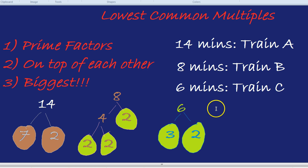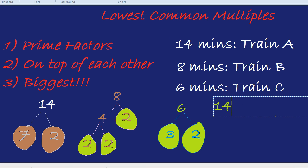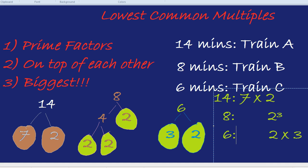Now we've done the prime factors, we write them on top of each other. Train A is 7 times 2. Train B is 2 cubed, but I'm going to write it in the 2 column because they always have to be in order. And the 6 is 3 times 2. The 2 goes in the 2 column and the 3 goes on its own as its own column.